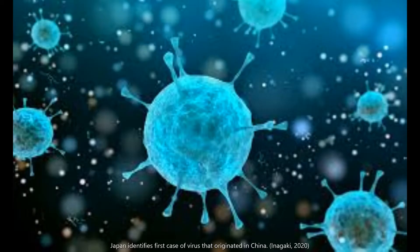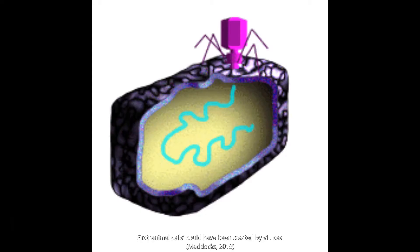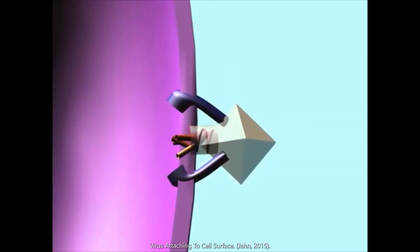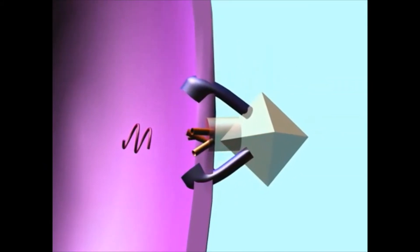The virus can then move on to the second stage of the lytic cycle known as entry or penetration. In this stage, the viral body releases its own nucleic acid, which can be either DNA or RNA, into the host cell.